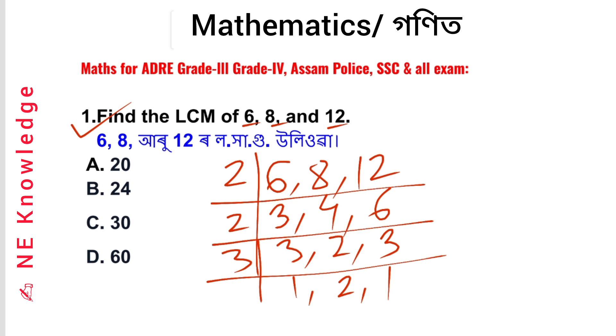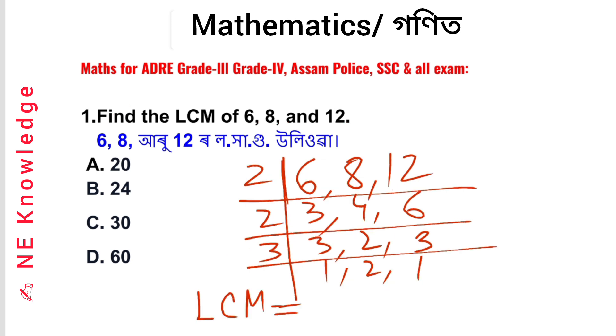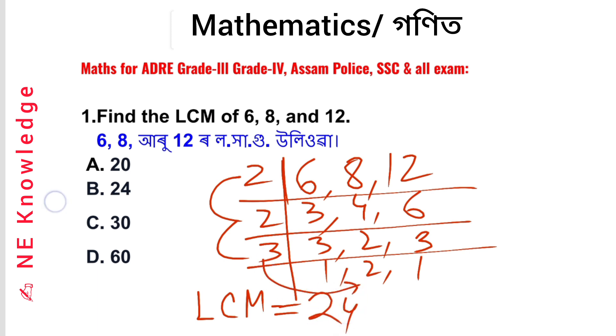The LCM is 2 × 4 × 3 = 12 × 2 = 24. Option number B is correct.